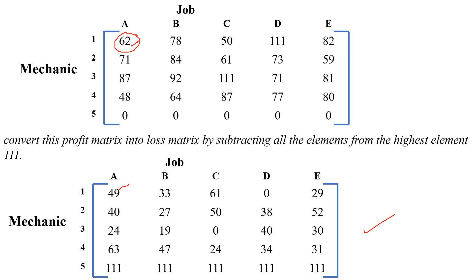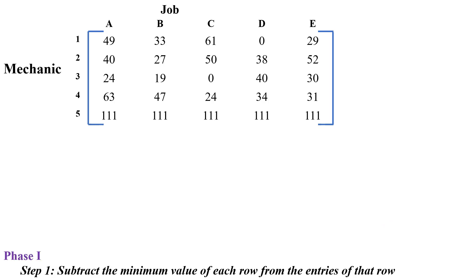Now we apply the Hungarian method. The first phase is row and column reduction. Step 1 is to subtract the minimum value of each row from the entries of that row. The minimum value for the first row is 0, for the second row it is 27, for the third row it is 0, for the fourth row it is 24, and for the fifth row all entries are 111 so the minimum value is 111.